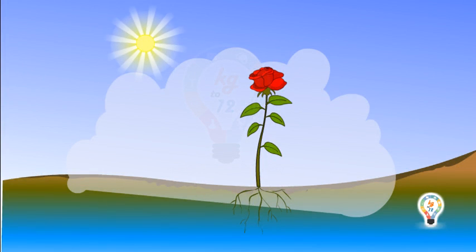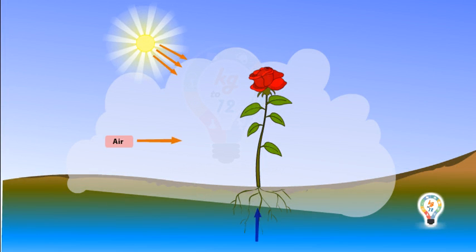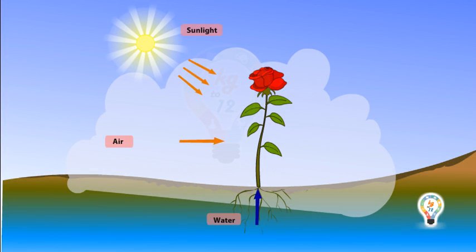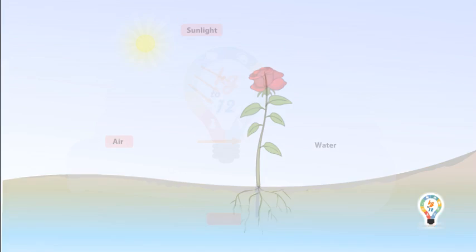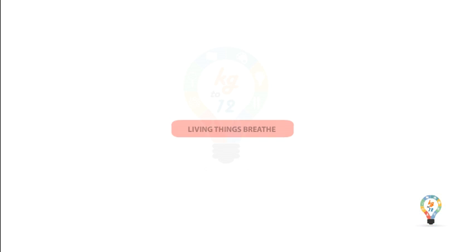Living things need food. All living things need food to live. Most plants can make their own food with the help of air, water, and sunlight. Animals get their food from other animals and plants.